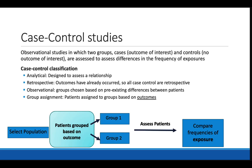One step down from cohort studies are case control studies. Like cohort studies, case control studies are observational studies designed to compare associations on the individual level. However, unlike cohort studies, participants are grouped based on outcome status, not exposure status. Because participants are picked based on the presence or absence of the outcome, case control studies are always retrospective.